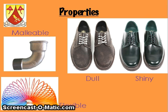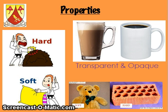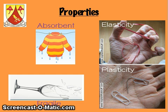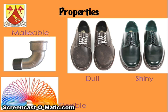So just running through them again quickly: transparent — I can see through it. Opaque — I can't see through it. Hard and soft — fairly obvious. Absorbent means it absorbs water, soaks up water. Fragile — it breaks easily. Elasticity — I can stretch it and it goes back to its original shape. Plastic or plasticity — I stretch it and it stays in the shape I left it. Dull and shiny — also fairly obvious. Malleable — I can bend it into the shape I want. And flexible — it's very bendy, easily bendable.